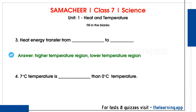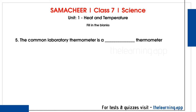Fourth question: minus 7 degree Celsius temperature is dash than 0 degree Celsius. Correct answer: less than 0 degree Celsius. Minus values are less than zero, so minus 7 degree Celsius is less than 0 degree Celsius. Fifth question: the common laboratory thermometer is dash thermometer. Correct answer: mercury thermometer.